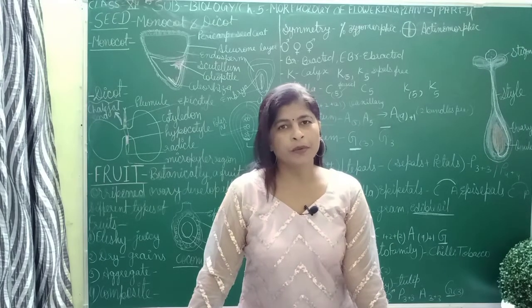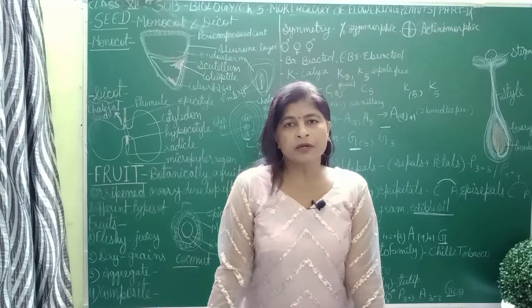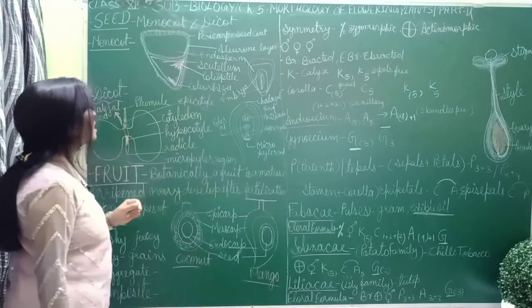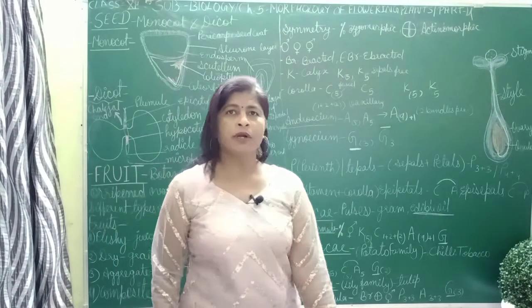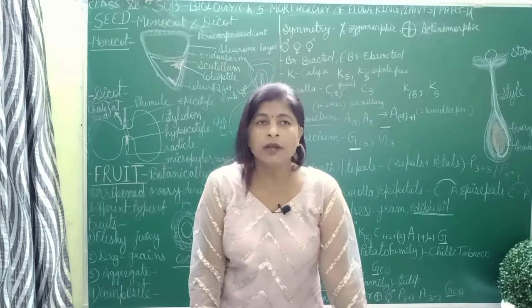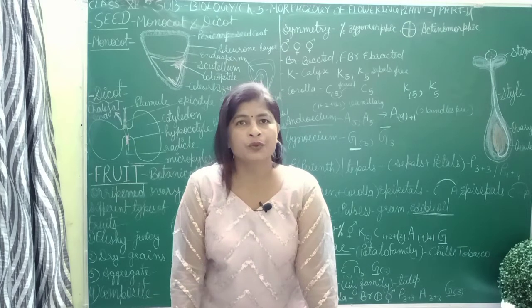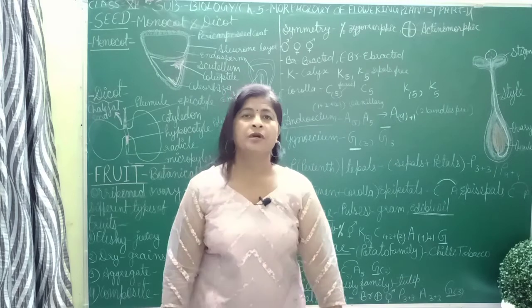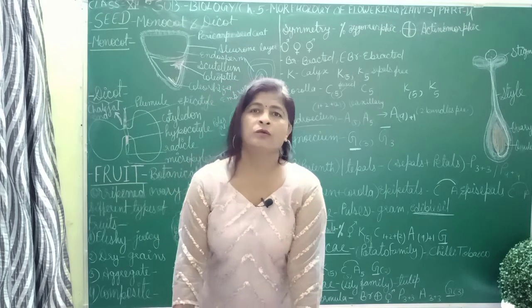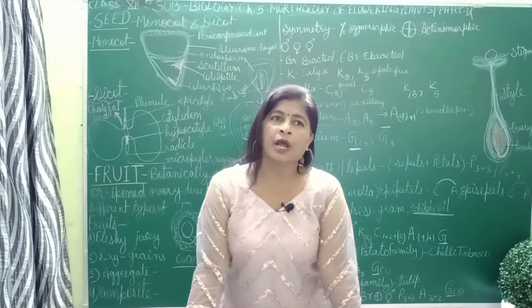Today we will start Class 11th Biology Chapter 5, Part 4. We have already studied root, stem, leaves, inflorescence, and all that. Today we will start the seed. We have already discussed that ovule converts into seed and ovary converts into fruit — that is, after fertilization, a fertilized ovule develops into a seed or mature ovule. A seed contains two parts: seed coat and embryo. Seeds could be of two types.